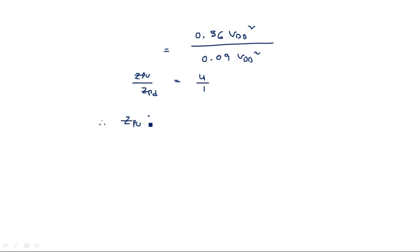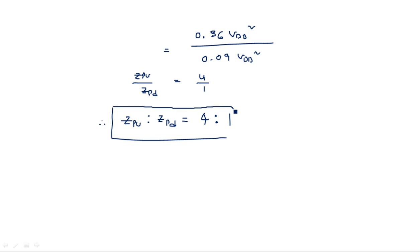36 divided by 9 equals 4, so ZPU/ZPD = 4/1, meaning 4 is to 1. Therefore the pull-up to pull-down ratio ZPU by ZPD should be 4:1 for the NMOS inverter. The minimum ratio we must maintain is 4:1 — above that is accepted, but below that is not accepted, and the required transfer characteristics will not be achieved if we reduce this value.